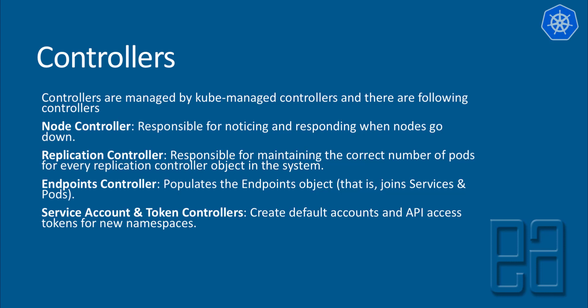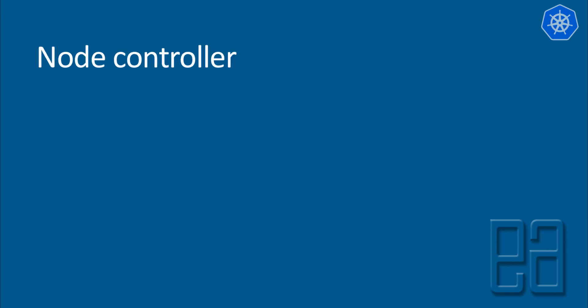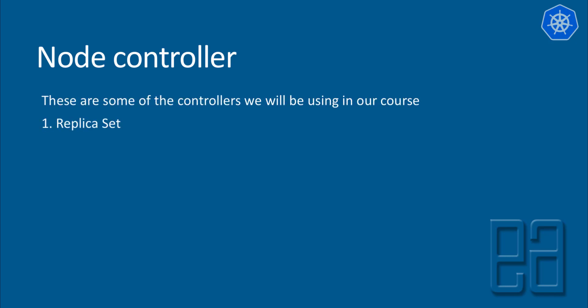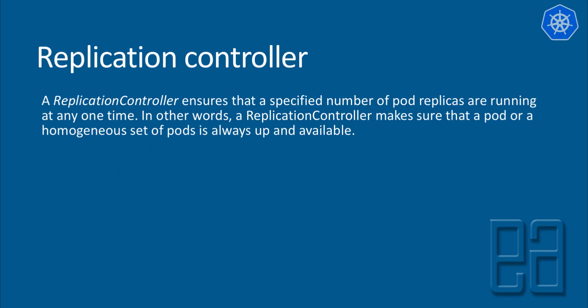We're going to be very much focused on the controllers helpful on the node side. The ones we'll discuss are the replica set, replication controller, and deployments. The replication controller ensures that a specified number of pod replicas are running at any one time — it makes sure that a pod or a homogeneous set of pods are always up and running. Replication controller will make sure the specified number of pods in your YAML manifest is always available and running.